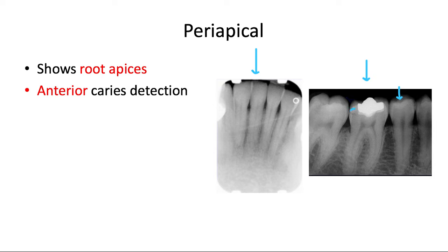We also have, speaking of not-normal anatomy, some interproximal caries. There also looks to be some occlusal caries on this molar — we'll talk more about caries detection in the next video. We also have this thin radiopaque line called the lamina dura, which is the dense border of alveolar bone that the periodontal ligament attaches to — a sign of a healthy periodontium. That very thin radiolucent line just inside the lamina dura is the periodontal ligament space where the actual ligament resides.